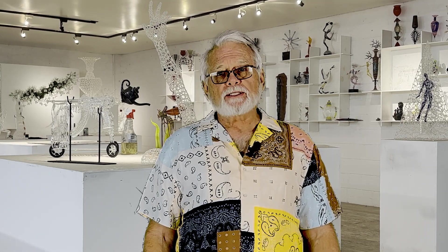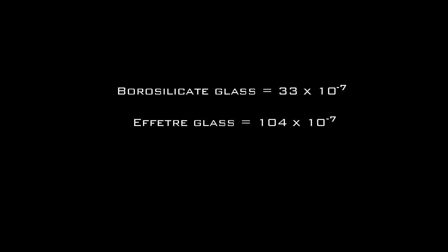The first thing we need to understand is expansion. When glass heats up, it expands. Different types of glass expand at different rates. This rate is stated as the expansion coefficient of glass, commonly called the COE. Borosilicate glass has an expansion coefficient of 33 times 10 to the minus 7th. A soft glass like Effetre has a COE of 104 times 10 to the minus 7th. If you combine two glasses with differing expansion coefficients, they cannot return to room temperature without breaking apart. This is called incompatibility. Glasses with the same or similar expansion coefficients are said to be compatible. Only compatible glasses can be worked together.